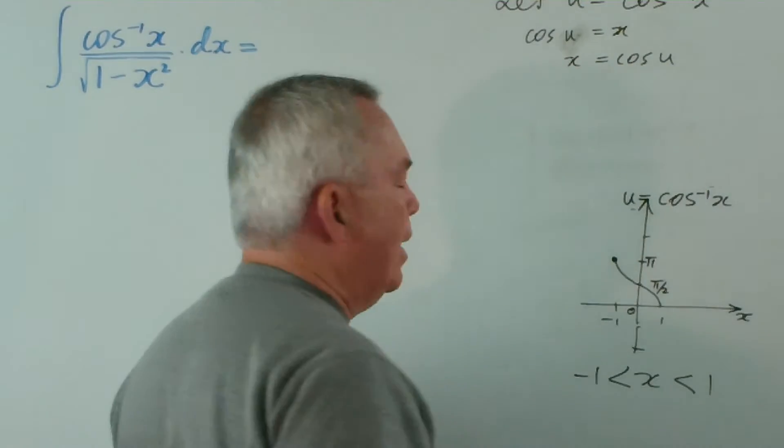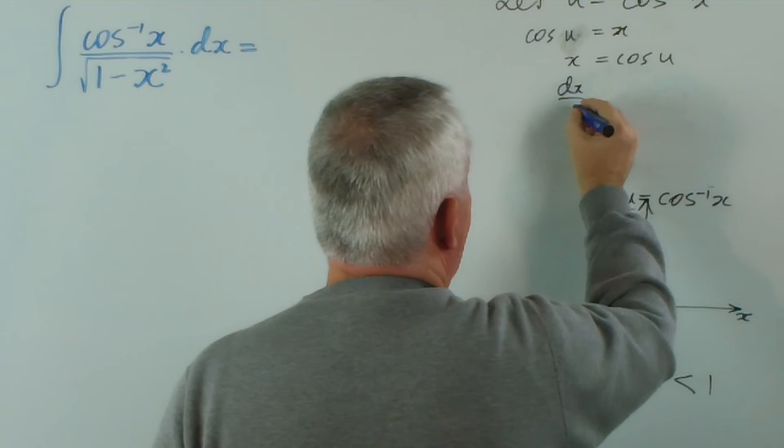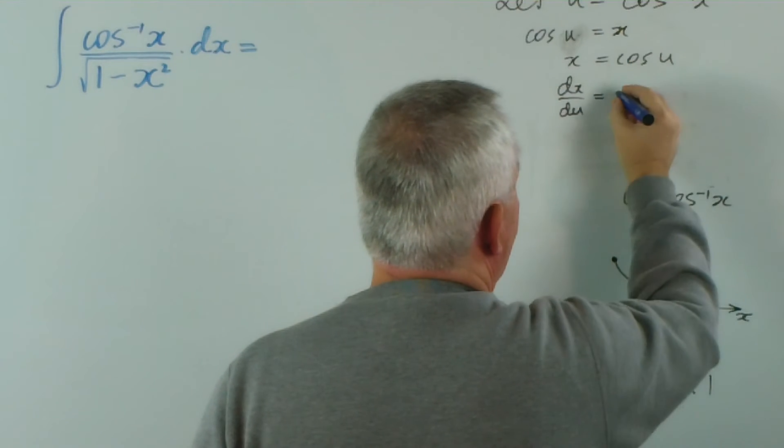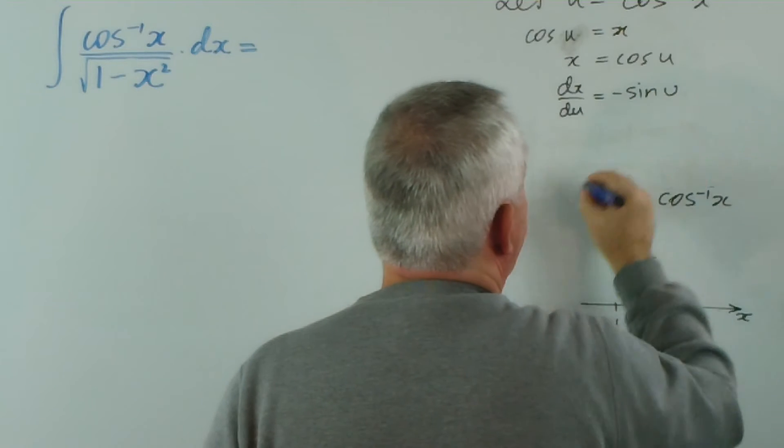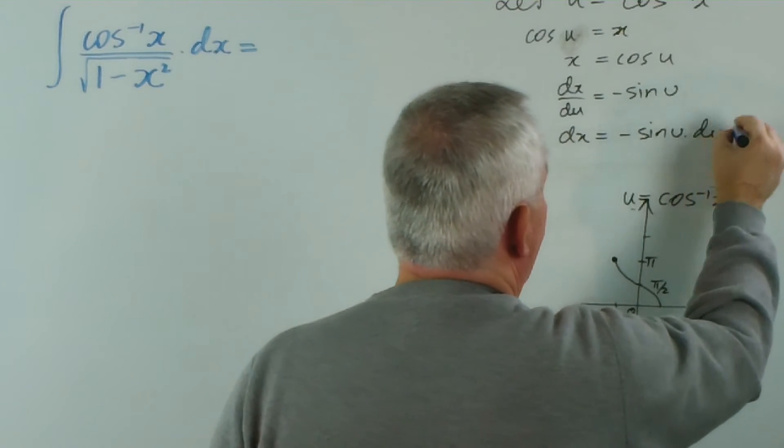And we can work out what dx is, because dx du is going to be the derivative of cosine, which is negative sine. So dx is negative sine u du.